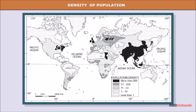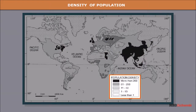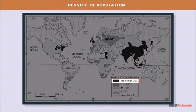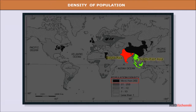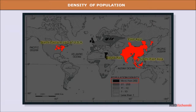Observe the given map carefully. We find that some regions are very crowded. As per the index given, areas with more than 200 persons on every square kilometer — like south, southeast and east Asia, the northeastern part of the USA, and the northwestern part of Europe — are some of the densely populated regions of the world.